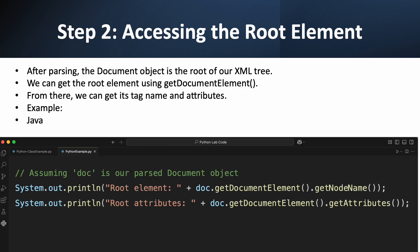Now that we've parsed our file, let's start navigating our tree. The Document object, which we named doc, is the very top of our XML tree — it's the trunk, so to speak. To get the actual root element, which is the first tag in your XML file, we use the method doc.getDocumentElement(). Once we have that element, we can start getting information from it. We can get the name of the root tag using getNodeName(), and we can also check for any attributes on the root element using getAttributes(). These simple commands are a starting point for all our XML explorations.